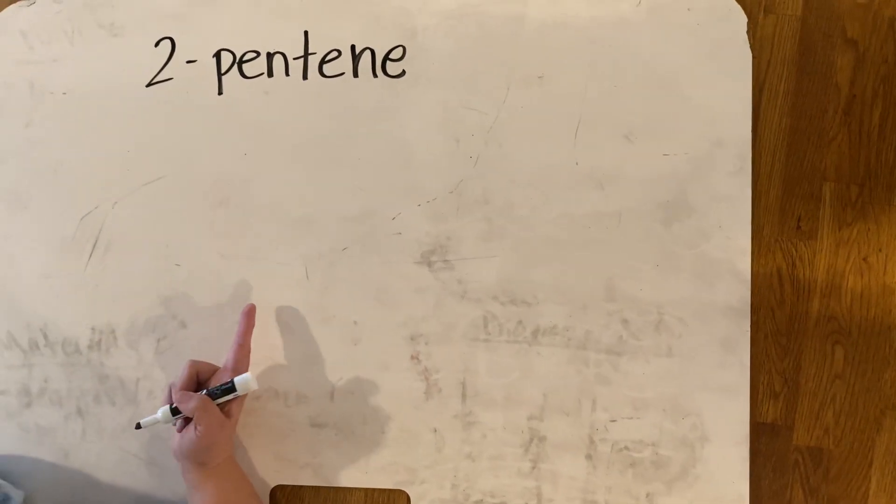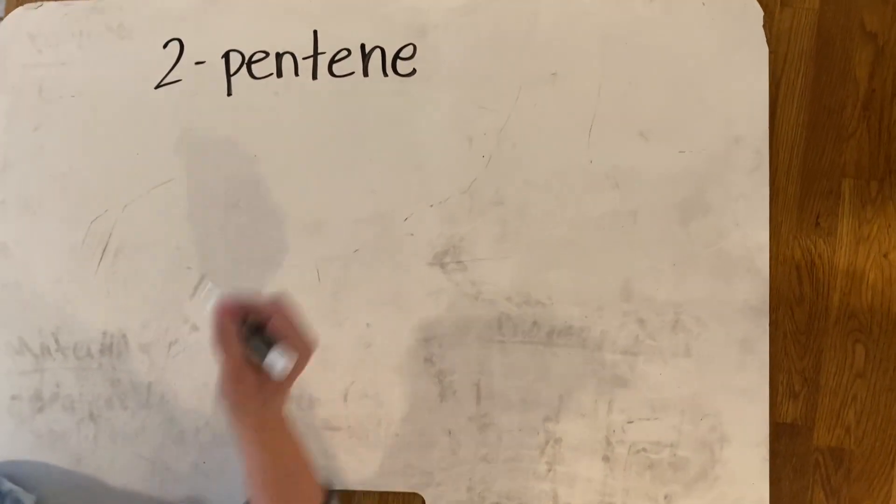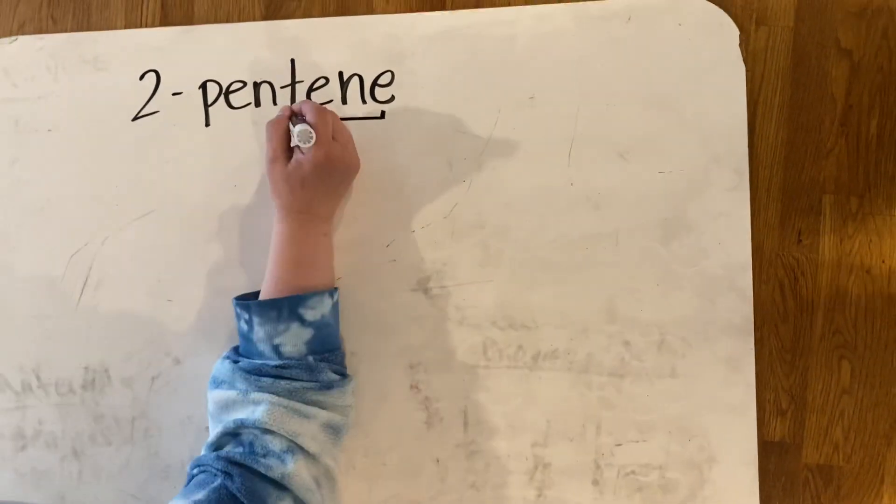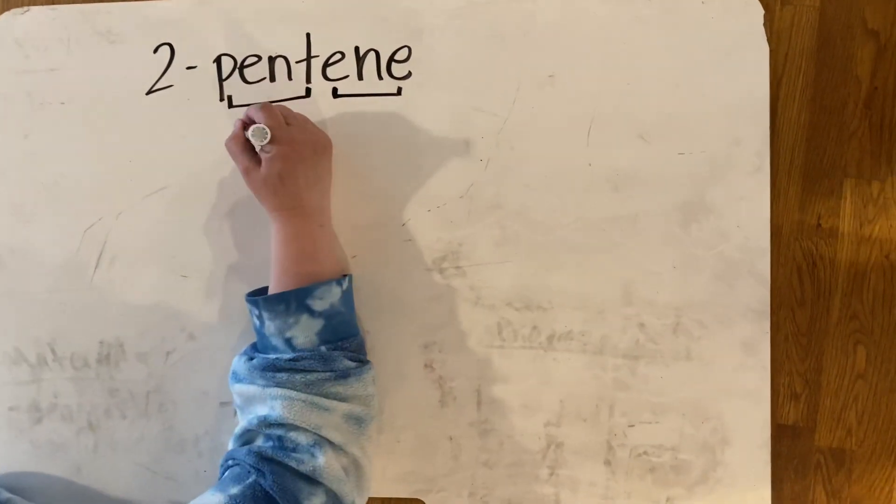So if you're given this 2-pentene and you're asked to draw it, here's what you want to see. This E-N-E ending means there's got to be a double bond. This pent tells me there are five carbons.